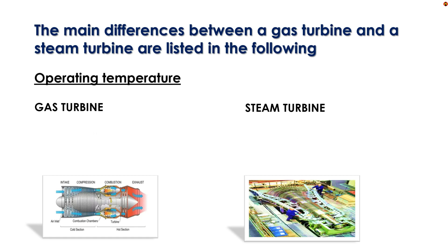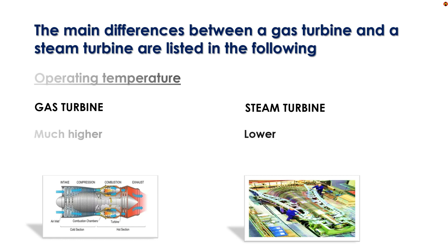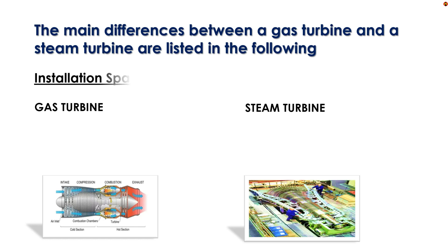Operating temperature: Gas turbine operates at much higher temperatures. Steam turbine operates at lower temperatures. Installation space: Gas turbine requires lower installation space. Steam turbine requires higher installation space.